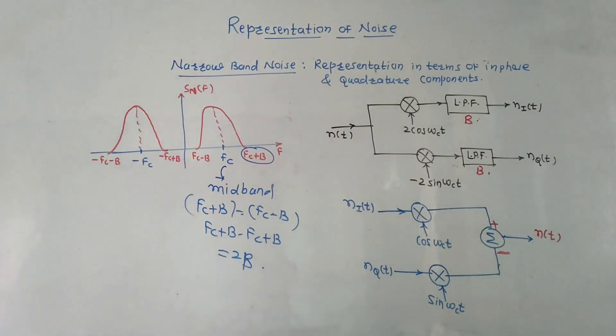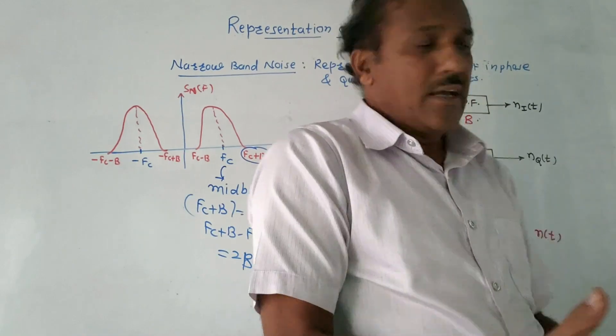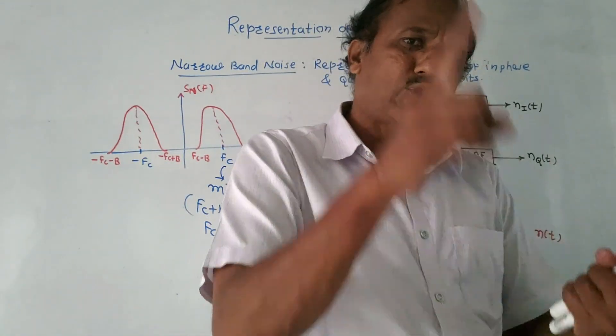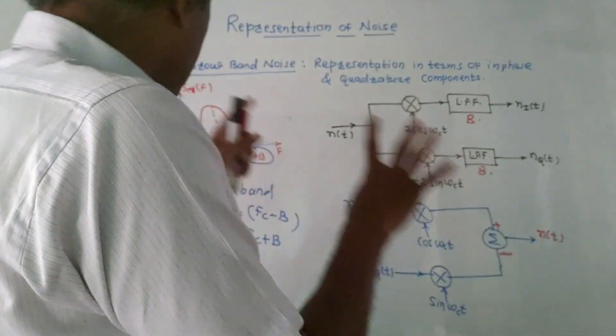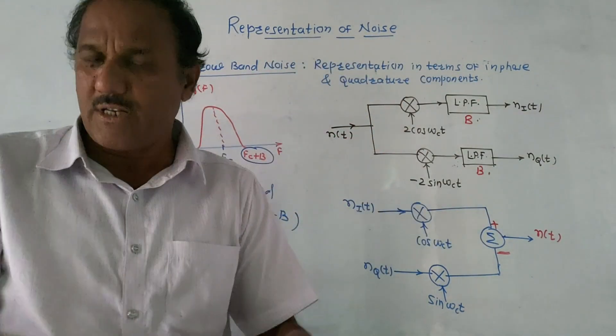And you will get the value of n(t), which is the narrow band noise - not only quadrature noise, it is narrow band noise which is combination of in-phase and quadrature. So this is the concept of narrow band noise and representation of it in in-phase and quadrature phase components.